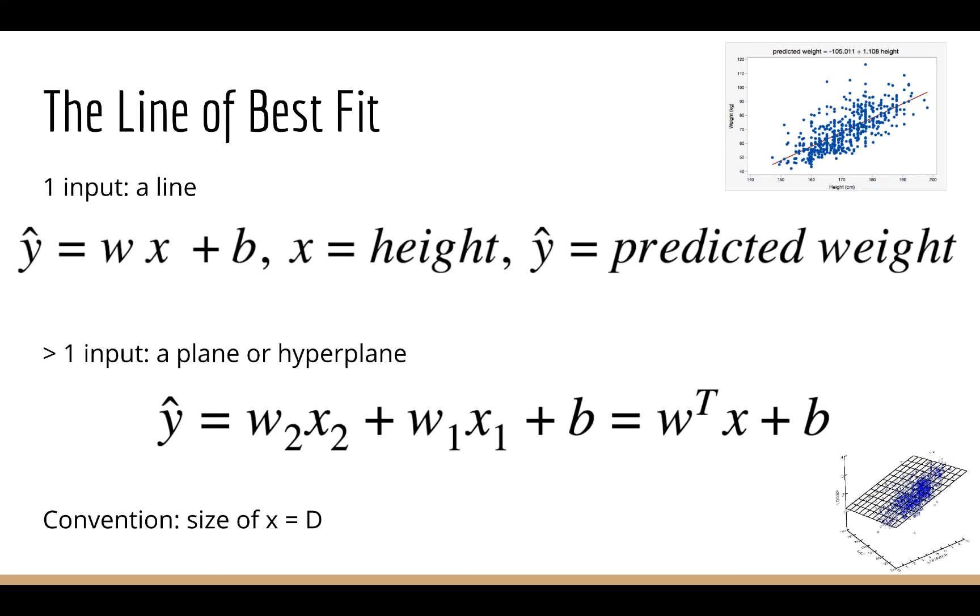We would write out our model as y-hat equals wx plus b, where x means height and y-hat means predicted weight. Of course in many real world problems you might have more than one input. For example, you might be trying to predict the price of a house given the number of bedrooms and the average family income of people in that neighborhood. In this case we would write it out as y-hat equals w2x2 plus w1x1 plus b. We could also write it as w transpose x plus b for short, where w is a vector and x is a vector.